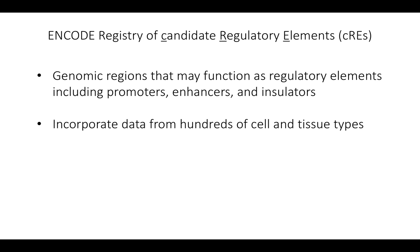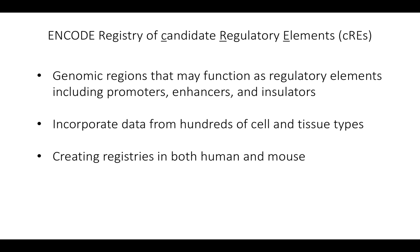What we actually did to create this was incorporate data from hundreds of cell and tissue types. We have over 600 unique cell types included in the registry for human and over 100 for mouse. We collected data from both the ENCODE project and incorporated data from the Roadmap Epigenomics project as well. We created registries in both human and mouse, allowing us to compare across species and look at elements that are conserved between the two.